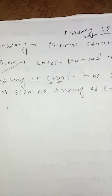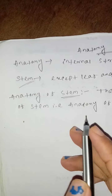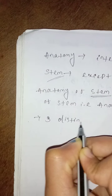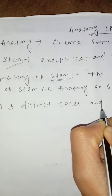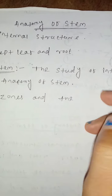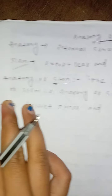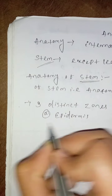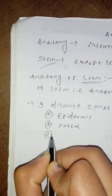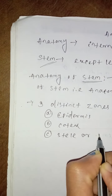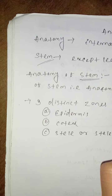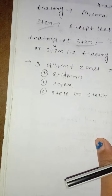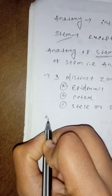The anatomy of stem contains three distinct zones. These are: first is epidermis, second is cortex, and third is stele or stellar region. Now I will discuss all about the epidermis first.